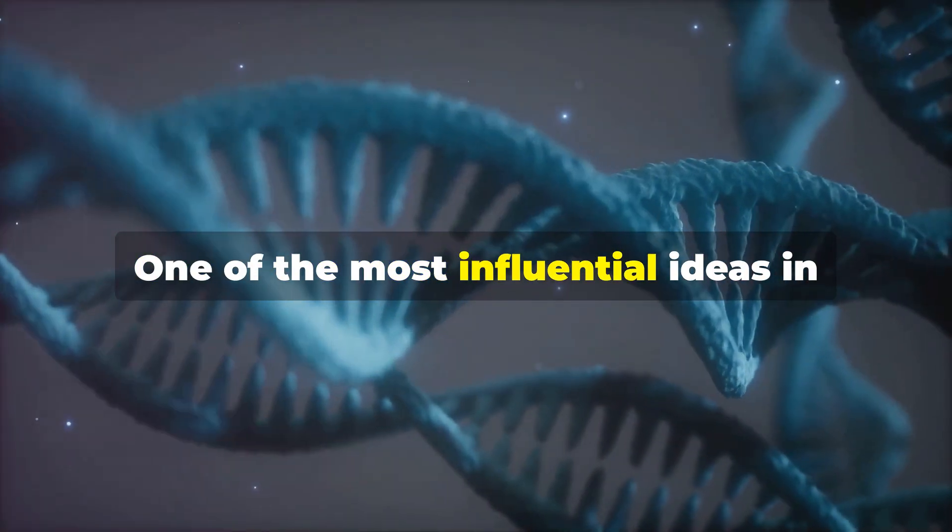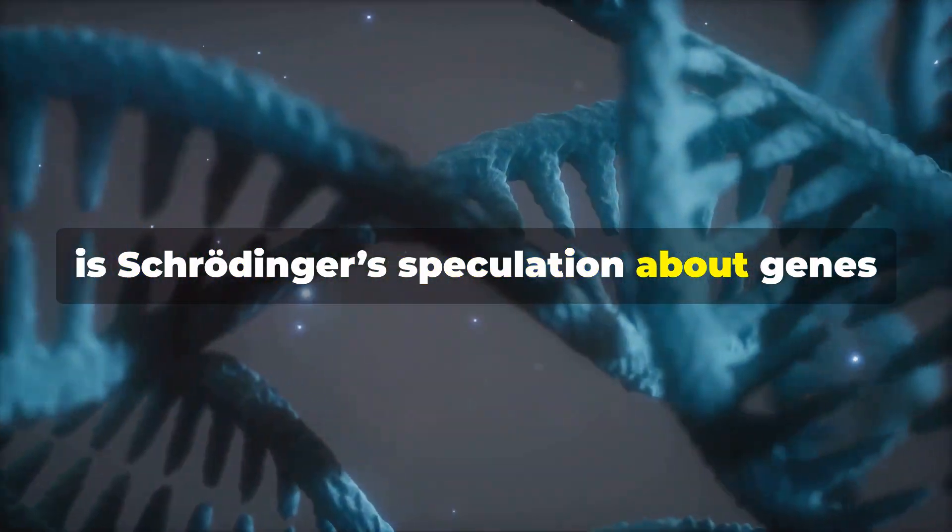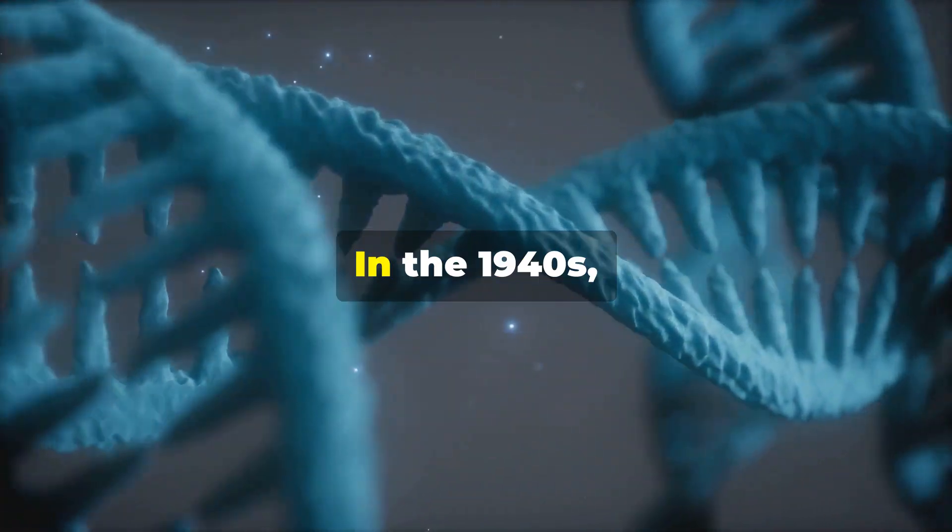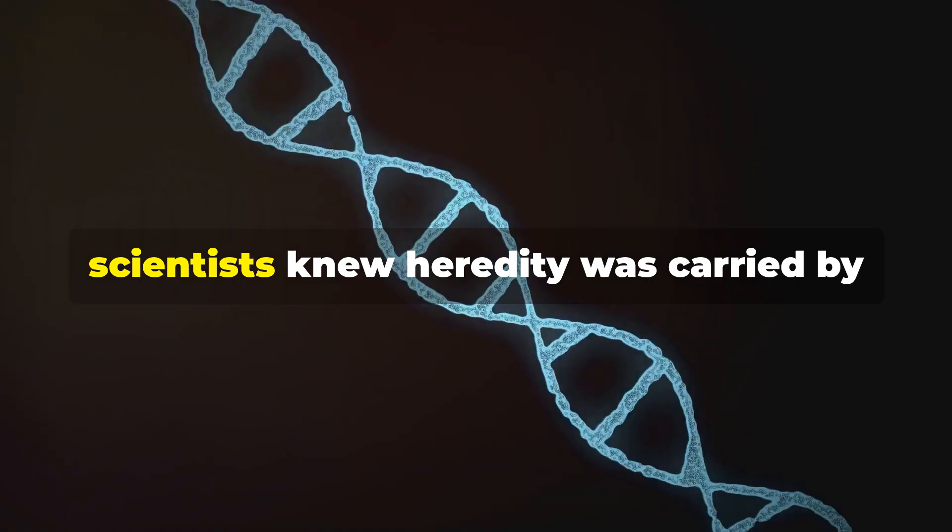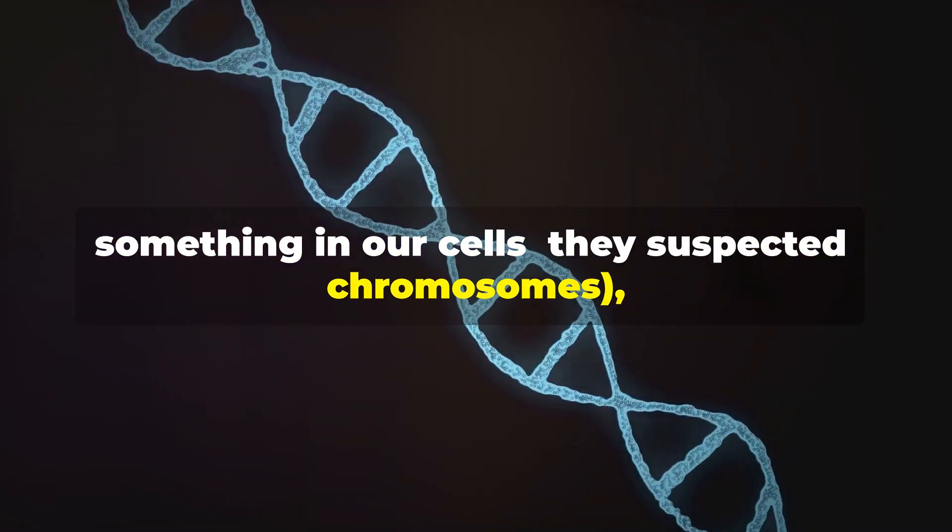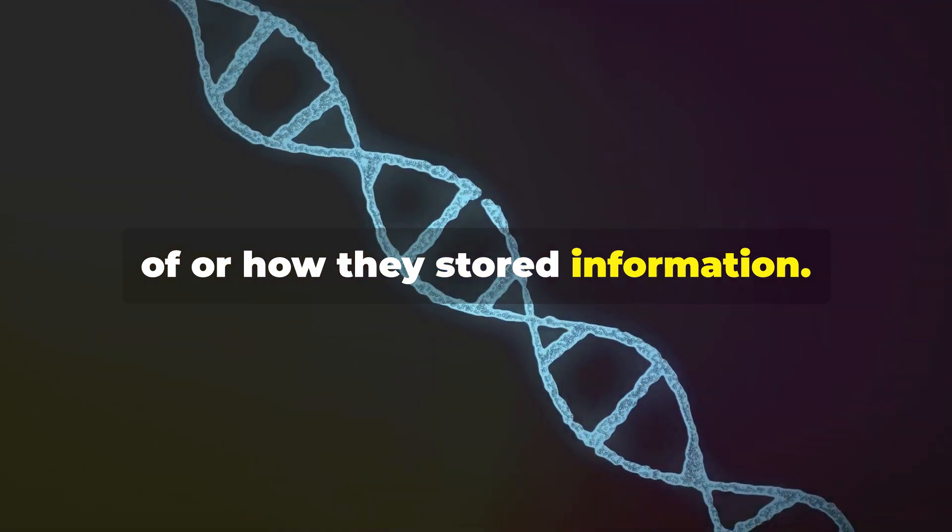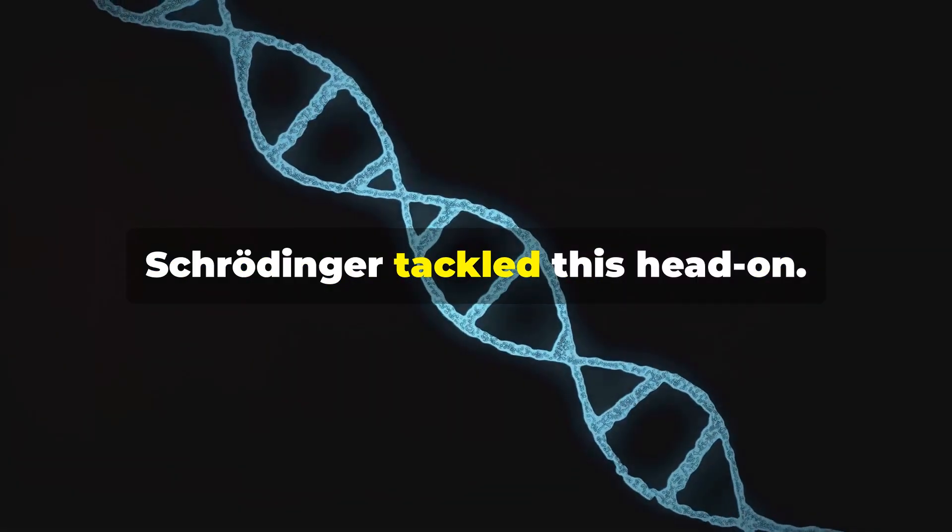One of the most influential ideas in What is Life is Schrödinger's speculation about genes and heredity. In the 1940s, scientists knew heredity was carried by something in our cells. They suspected chromosomes, but they didn't know what genes were made of or how they stored information. Schrödinger tackled this head on.